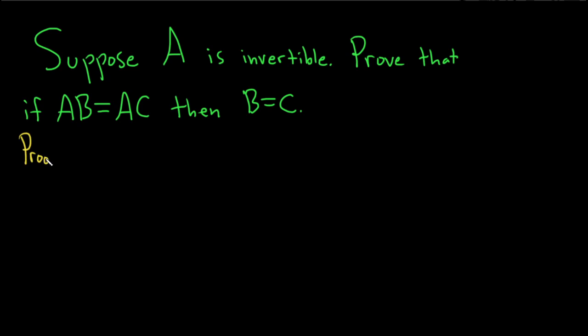Let's go ahead and go through the proof. So we'll start by just reiterating that A is invertible. So suppose A is invertible and also that, let's assume this part here, AB equals AC.